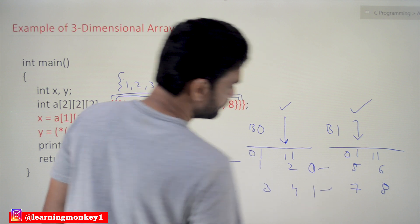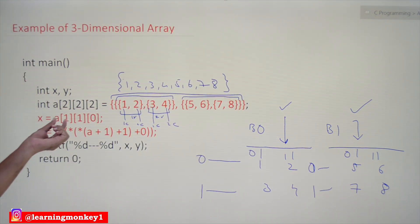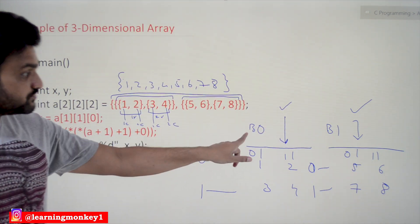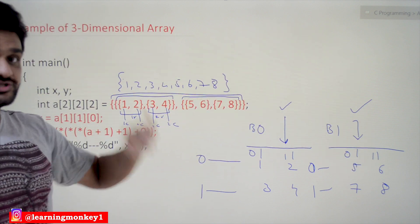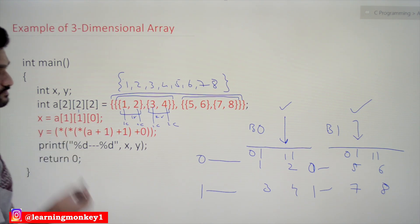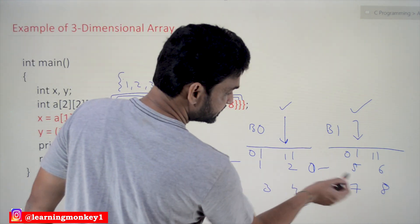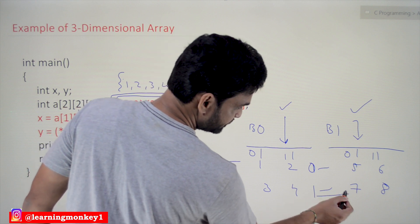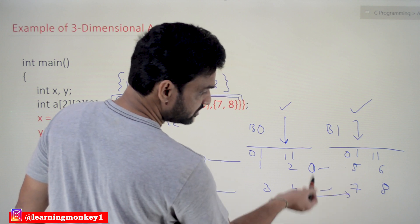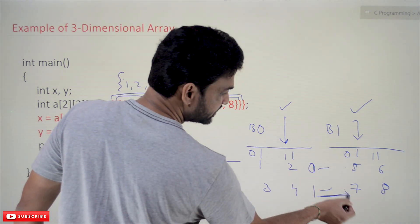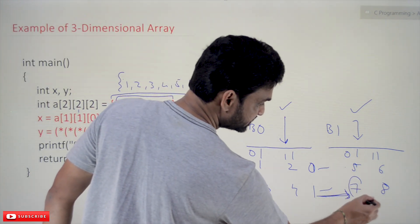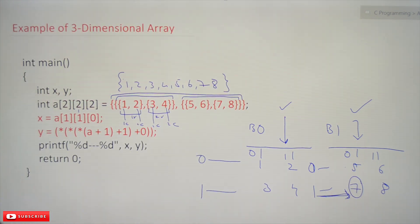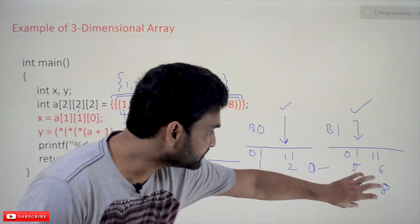Now we will try to access an element which belongs to block 1. In this block, we are trying to access the element at the first row — row index 1 — and column element 0. So this is going to be the output of the array access statement. This is the element that we are trying to access using the array name.